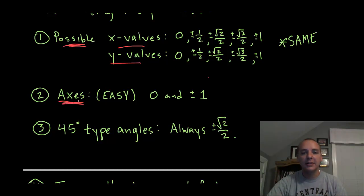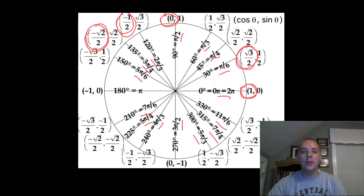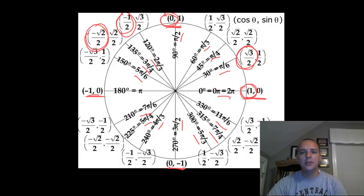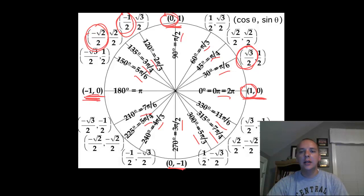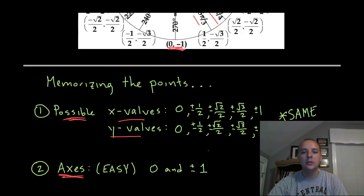Let's start with the axes — they are the easiest. If you are up, down, left, or right on the x or y axis, it's going to be (0,1) or (1,0). Just use common sense: to the right it would be (1,0) and to the left (−1,0). And (0,1) versus (0,−1) on the y-axis. Those are super easy.